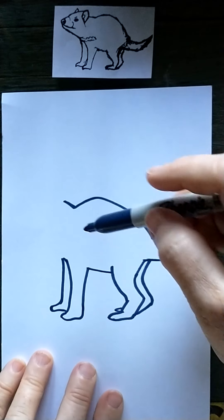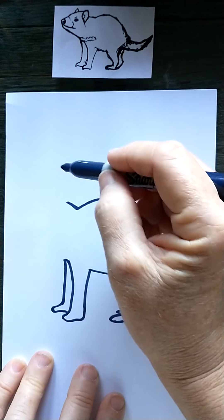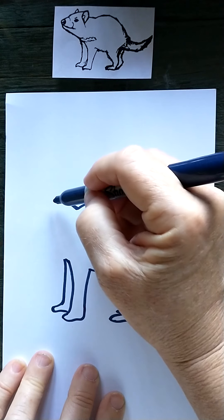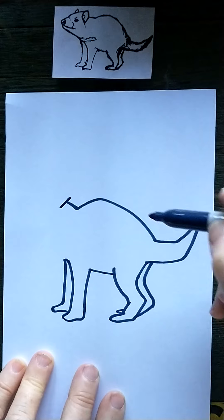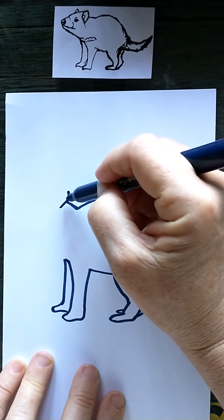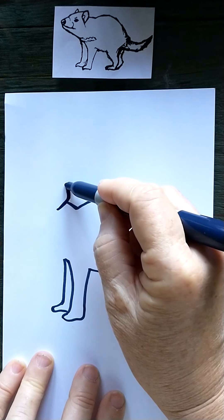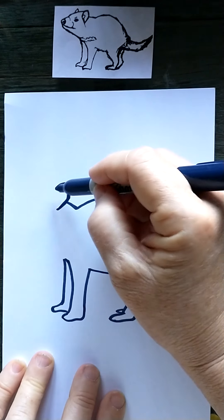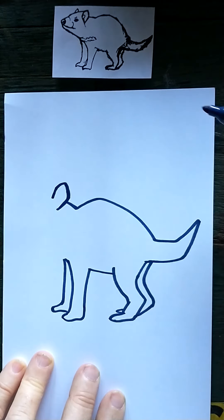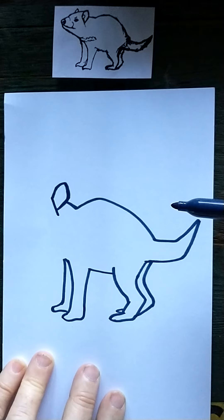And then the neck here is interrupted by the ear. So let me put the line where the ear is going to come up. And then the ear is going to go at an angle, and then back up, back around, and then down again.